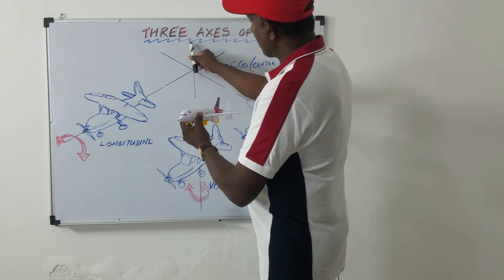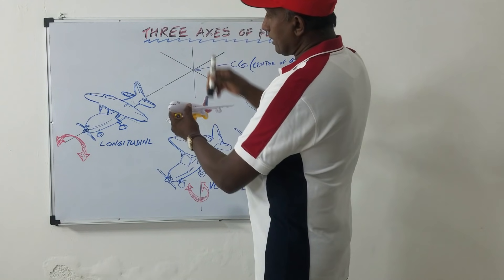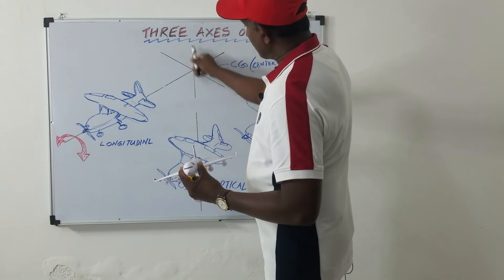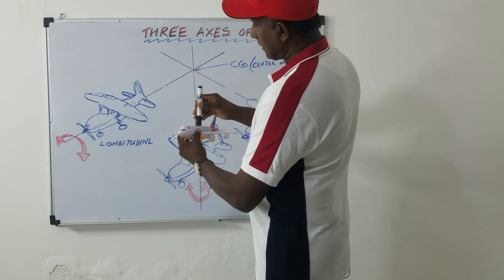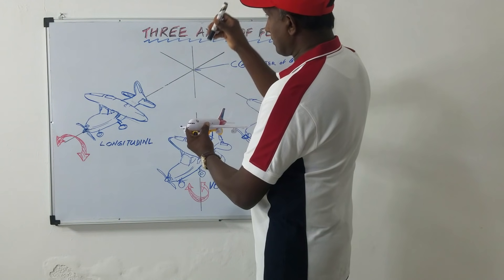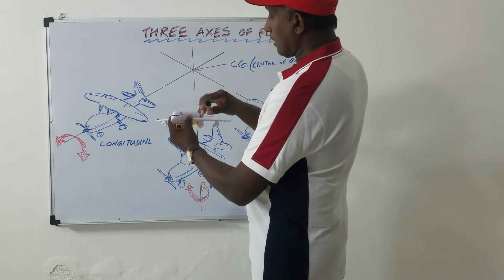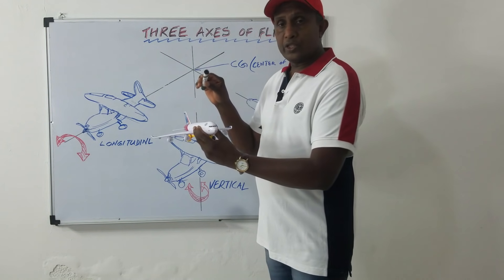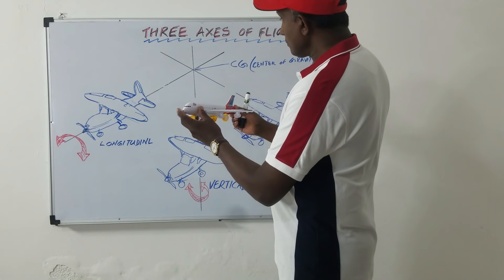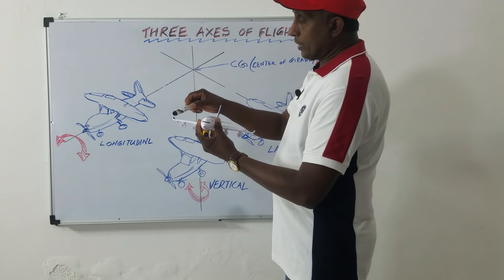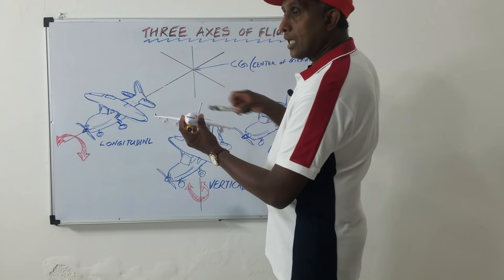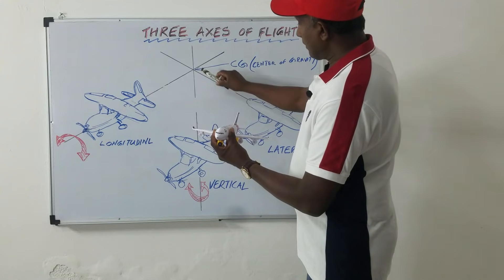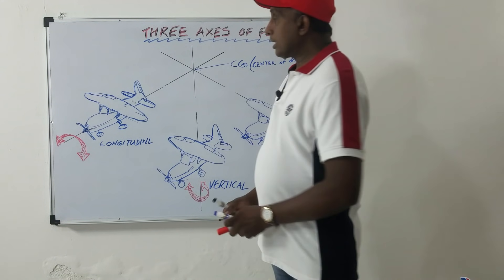This axis, top to bottom, is called the vertical axis. The vertical axis and lateral and longitudinal axes pass through this point called CG, center of gravity. The axis 90 degrees to the vertical axis is called the longitudinal axis, and the axis 90 degrees to both the longitudinal and vertical is called the lateral axis. The axis from wing tip to wing tip is called the lateral axis, and the axis from nose to tail is called the longitudinal axis.